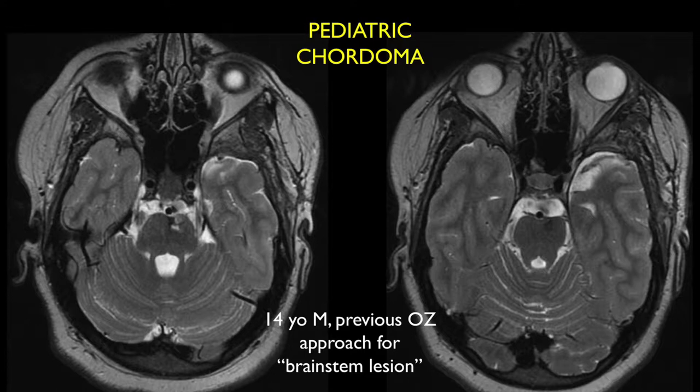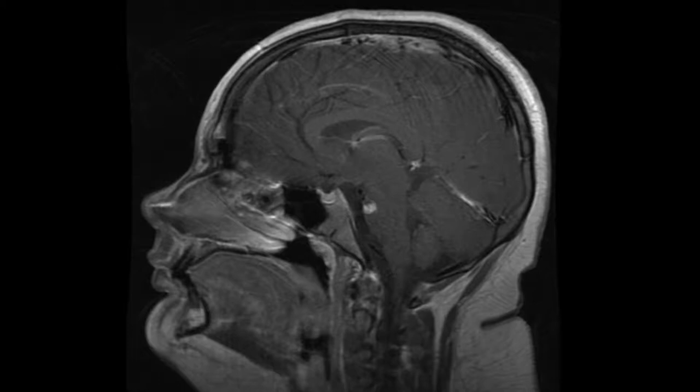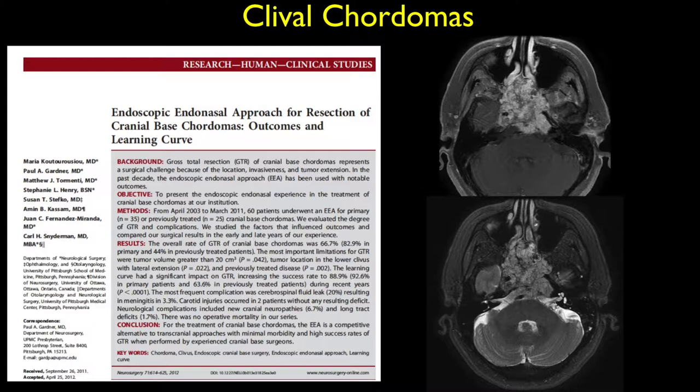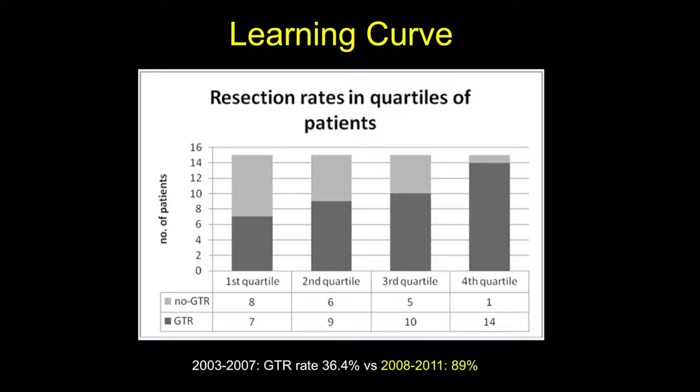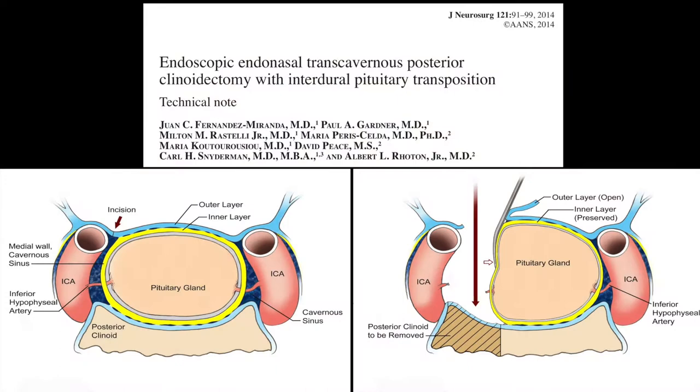This is Dr. JFM presenting the case of a 14-year-old patient with a previous orbitosegomatic approach for what was thought to be a brainstem lesion, that happened to actually be a clival cordoma invading the brainstem. Clival cordomas are challenging tumors at the base of the skull that require significant experience to achieve good resection rates. These tumors sometimes involve the upper petroclival region, for which we describe the transcavernous posterior clinoidectomy with an interdural pituitary transposition.